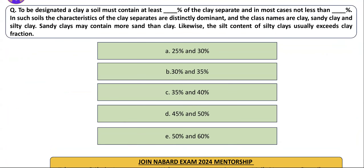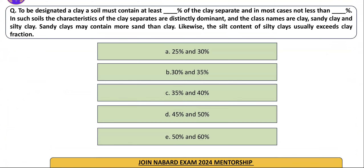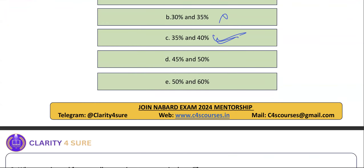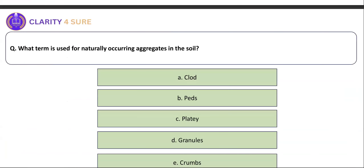To be designated as a clay soil, the soil must contain what percentage of clay? To call a soil a clay soil, what percent of clay should be present? The right answer is C — 35 to 40 percent.